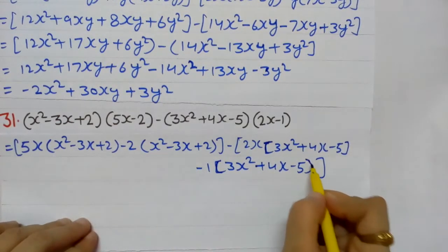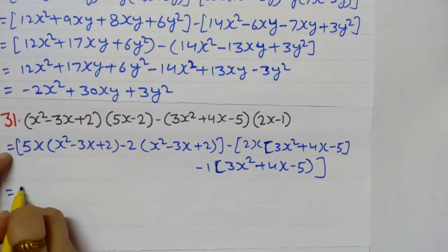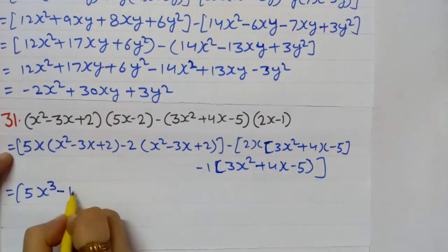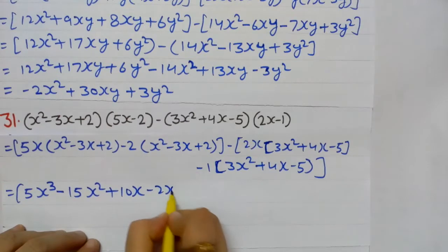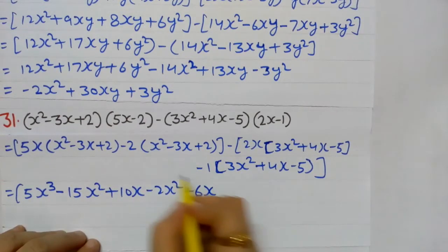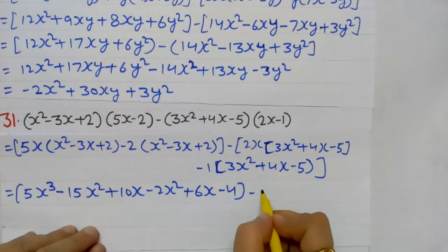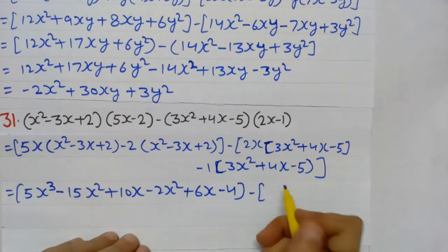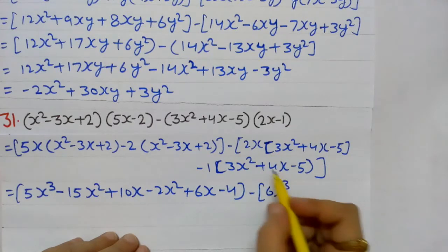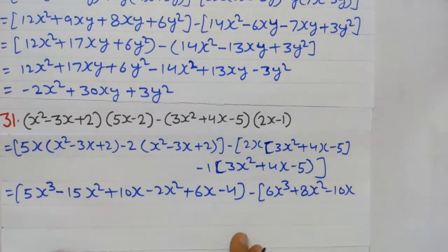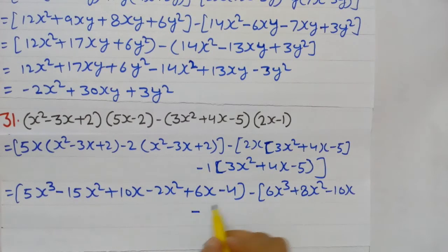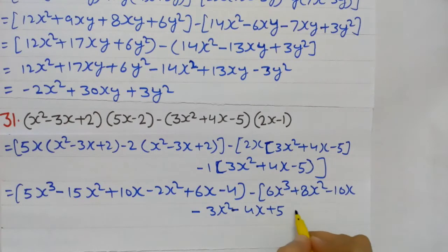Now we multiply: 5 × x² × 2x = 5x³. 5×3 = 15x². 5x × 2 = 10x. Now multiplying by minus 2: minus 2x², minus × minus = plus 6x. Minus 2 × 2 = minus 4. In the second bracket: 2x × 3x² = 6x³. 4×2 = 8x². 2x × minus 5 = minus 10x. Multiplying by minus 1, sign changes: minus 3x², minus 4x, plus 5.